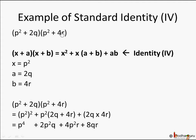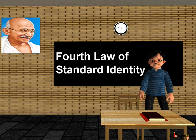So do it very simply — figure out which law to use. Here you can clearly see the same term p² appears in both factors, so treat p² as x, 2q as a, and 4r as b, and apply the law. Just replace the left-hand side with the right-hand side: wherever you have x write p², wherever a write 2q, wherever b write 4r. Then open all brackets — (p²)² becomes p⁴ — and expand to get the final result. That's all in this lesson, children. Bye bye!